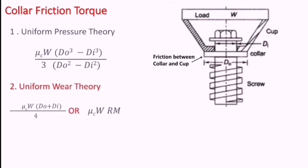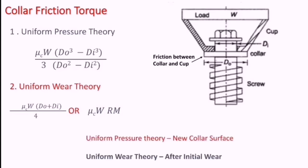According to uniform wear theory, the torque is µc × W × (d0 plus di) divided by 4, or equivalently µc × W × Rm, where Rm is the mean radius. Uniform pressure theory is to be used when the surface of the collar is new, whereas uniform wear theory is to be used after initial wear of the collar surface.